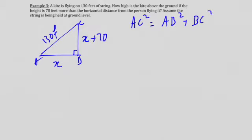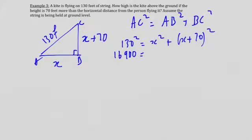That is basically having 130 squared equal x squared plus x plus 70 squared. So, if I distribute and reorganize everything, I end up to have 16,900 equal x squared plus x squared plus 140x plus 4900.